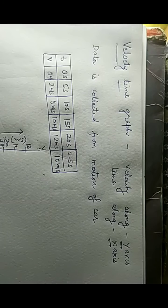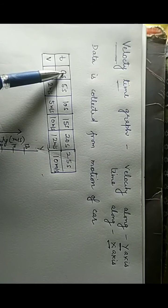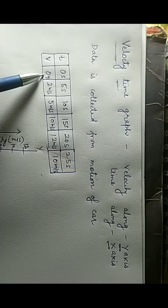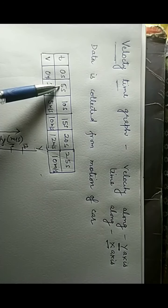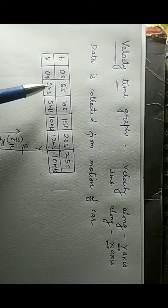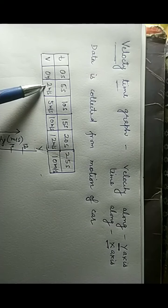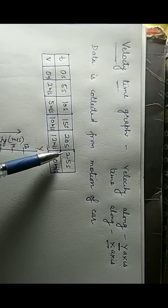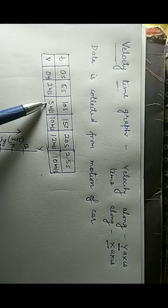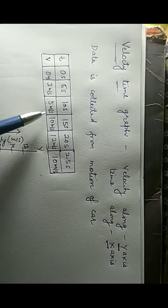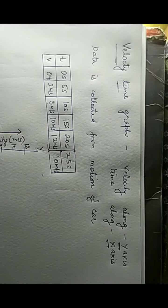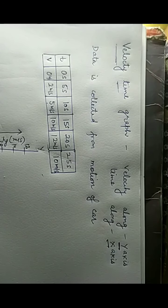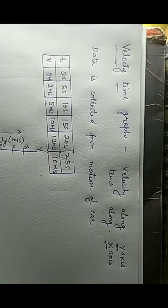At time 0, the velocity of the car was 0 meters per second. At 5 seconds, the velocity is 2 meters per second. As I increase the time by 5 seconds, the speed also changes: 5, 10, 12, and 10 meters per second. This data can now be carried forward to the graph.